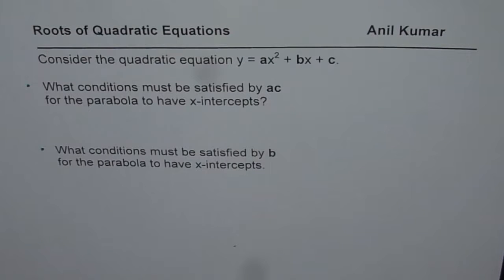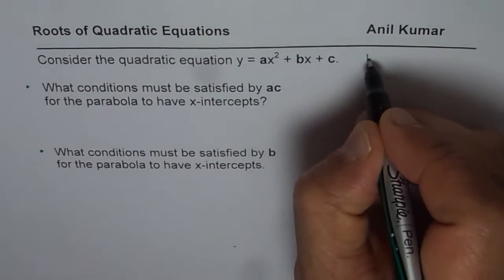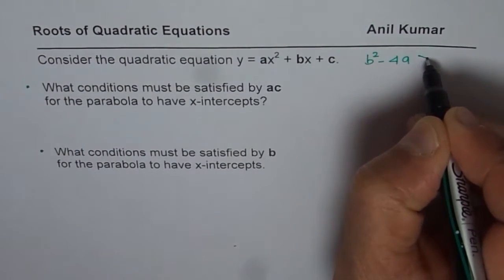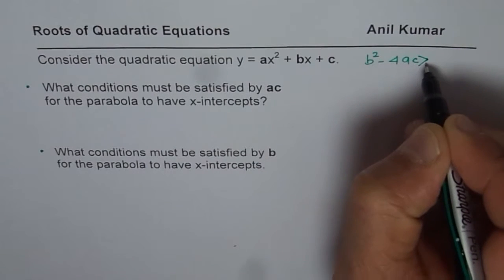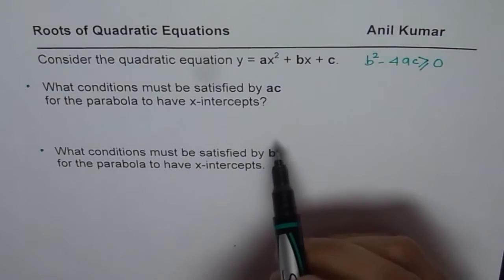You can pause the video, solve the question and then look into my suggestions. This question has been developed from the formula of discriminant which you know is b square minus 4ac. That should be greater than or equal to 0 for having x-intercepts.